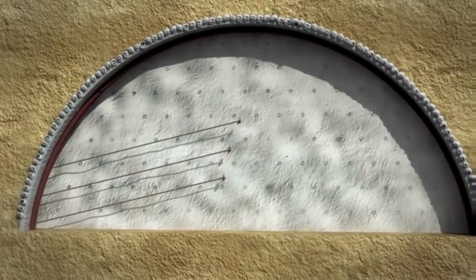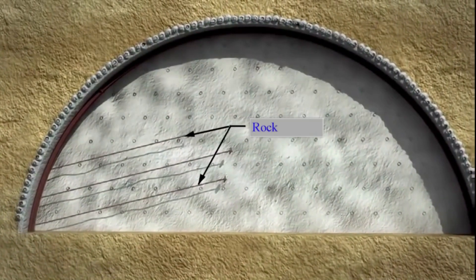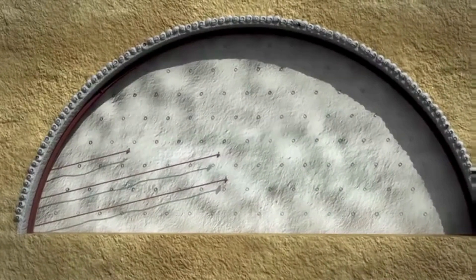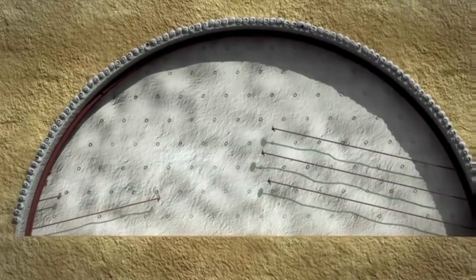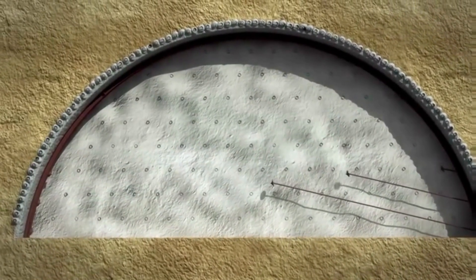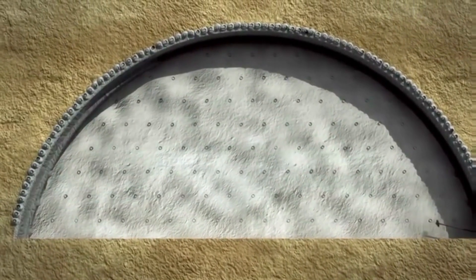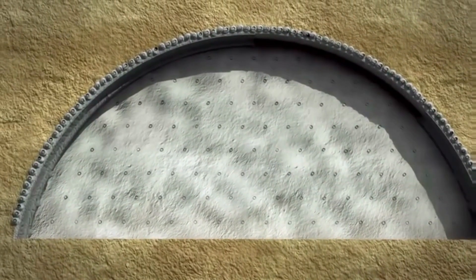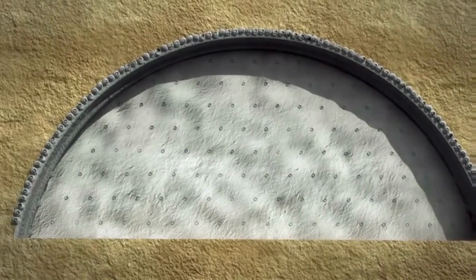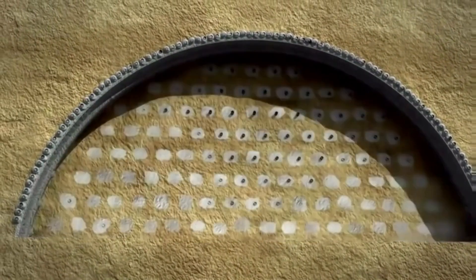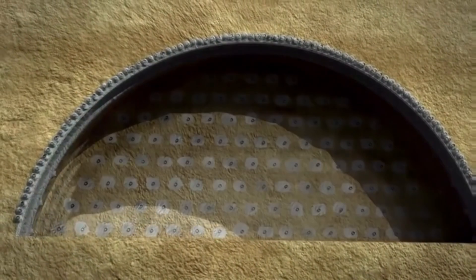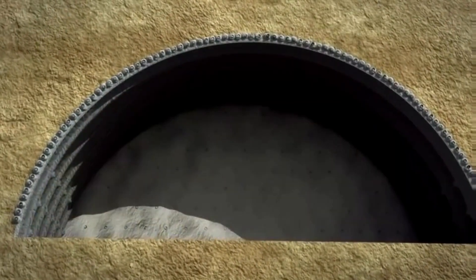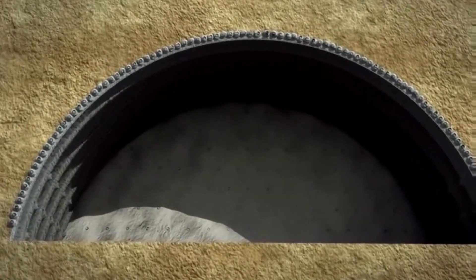Once the tunnel has been excavated, a series of support structures are added to ensure its stability. These include steel arches, shotcrete lining, and rock bolts, which reinforce the tunnel and protect it from collapsing.